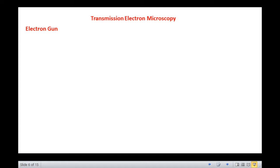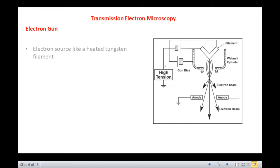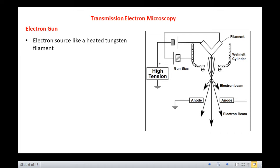Let us now discuss the instrumentation or parts of a TEM. Let us first discuss the electron gun. Electron microscopes utilize an electron source like a heated tungsten filament or a cathode heated up by current. The electron source or gun is at the top and produces a stream of monochromatic electrons.